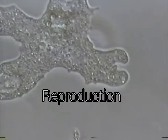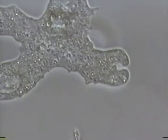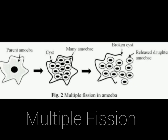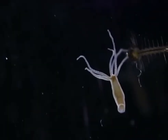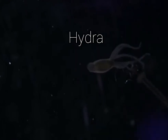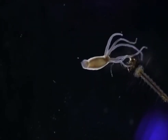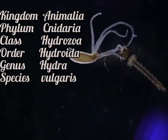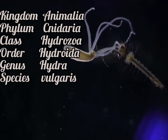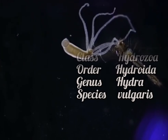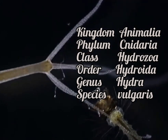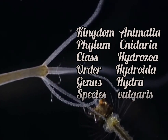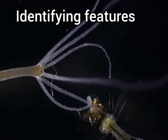Amoeba reproduces asexually by binary fission as well as by multiple fission. The next organism in this activity is Hydra. The hierarchical classification of this organism is: Kingdom Animalia, Phylum Cnidaria, Class Hydrozoa, Order Hydroida, Genus Hydra, Species vulgaris.